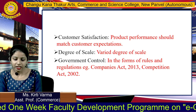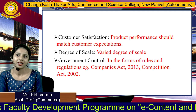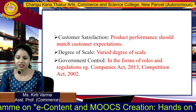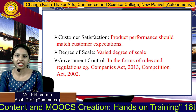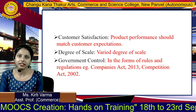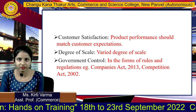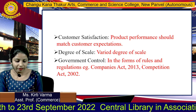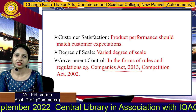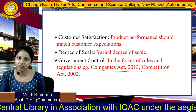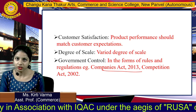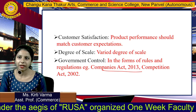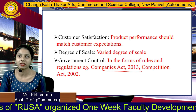Next is customer satisfaction. The main aim of business is to satisfy customers and to maintain customer loyalty, so product performance should match customer expectations. Next is degree of scale — business operates on various scales: local level, national level, and international level. Next is government control. Every business is governed by the Companies Act 1956 or Companies Act 2013, the Competition Act 2002, and the Environmental Protection Act. Every law, rules and regulations are framed for the regularity and governance of business.